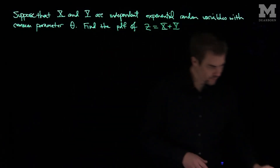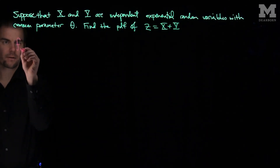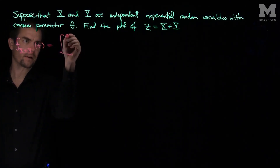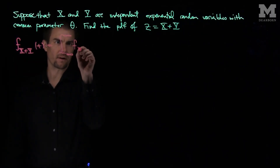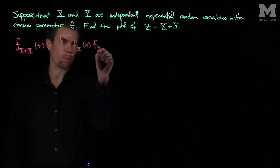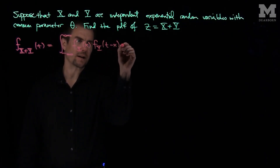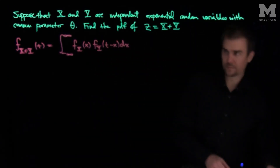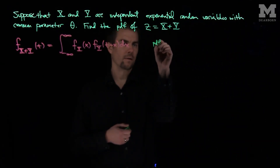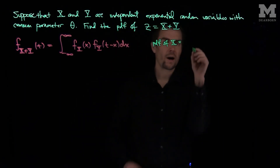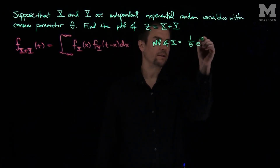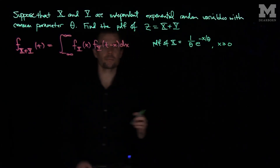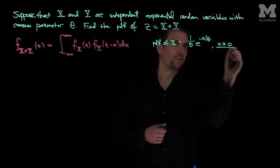To do this we'll need our convolution formula. Recall that the PDF of x plus y as a function of t is the integral from negative infinity to infinity of the PDF of x at x, times the PDF of y at t minus x, dx. For exponential random variables, the PDF of x equals the PDF of y, and it's (1/θ) e^(−x/θ) for x greater than or equal to 0.